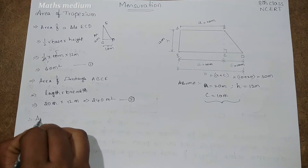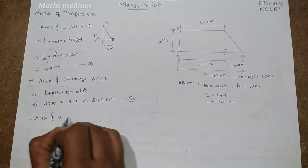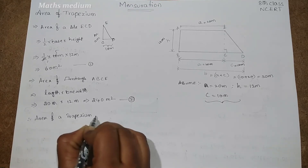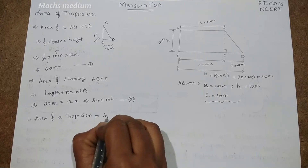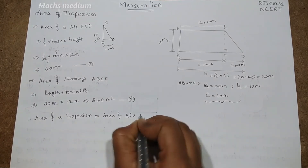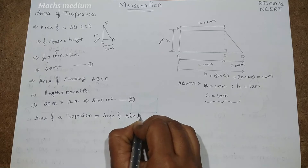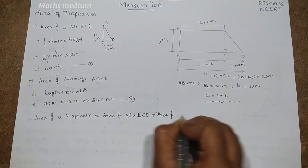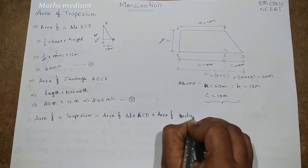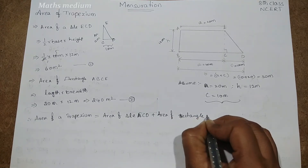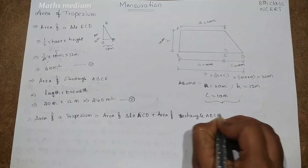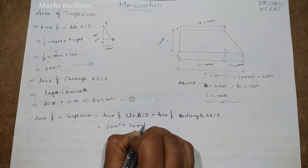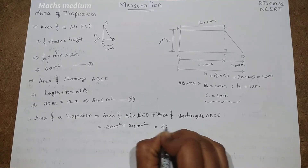By combining these two, we get the area of trapezium. Therefore, area of trapezium = area of triangle ECD + area of rectangle ABCE = 60 square meters + 240 square meters = 300 square meters.